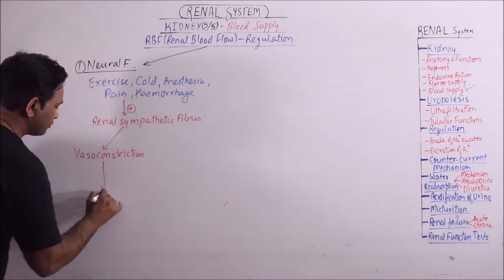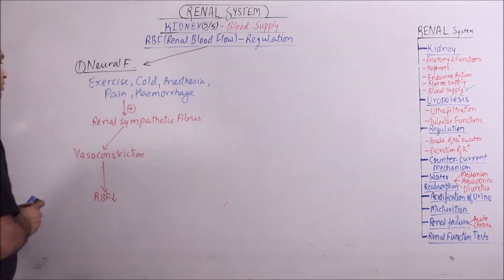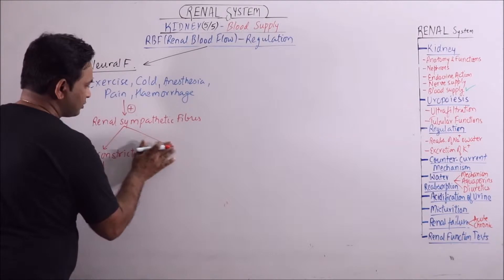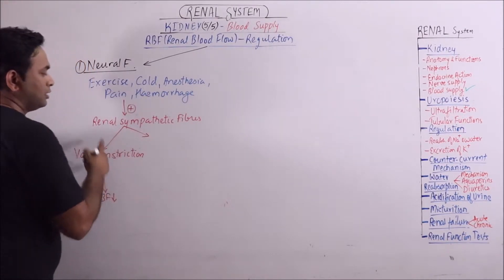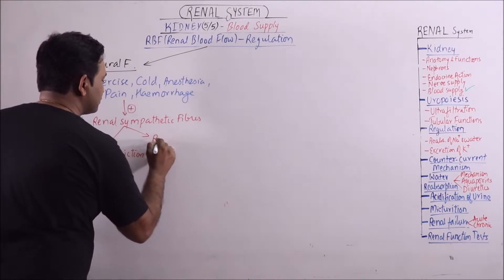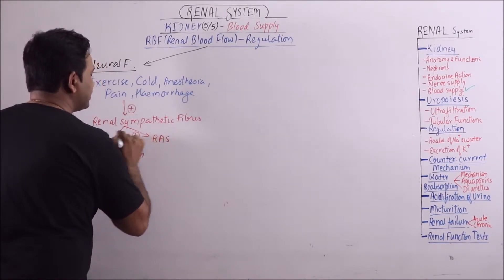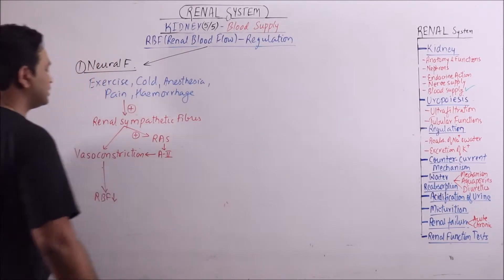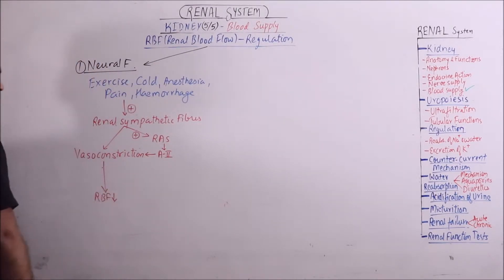These conditions stimulate the renal sympathetic fibers, and when such fibers are stimulated, vasoconstriction occurs and this vasoconstriction will result in decrease in RBF. Another important thing is that the activation of renal sympathetic fibers stimulate the renin angiotensin system which result in formation of angiotensin 2, which further result in vasoconstriction resulting in further decrease in RBF.